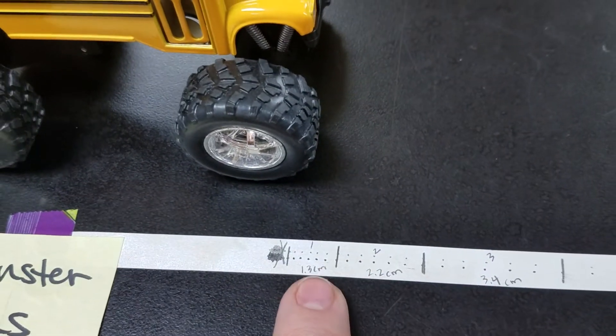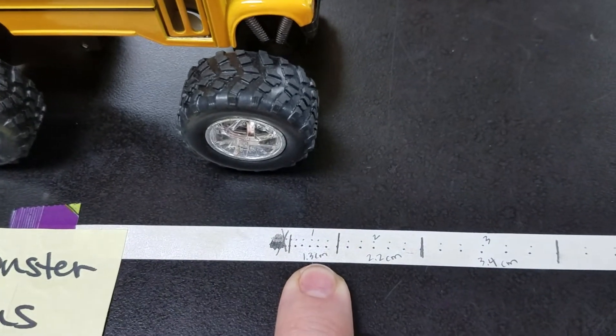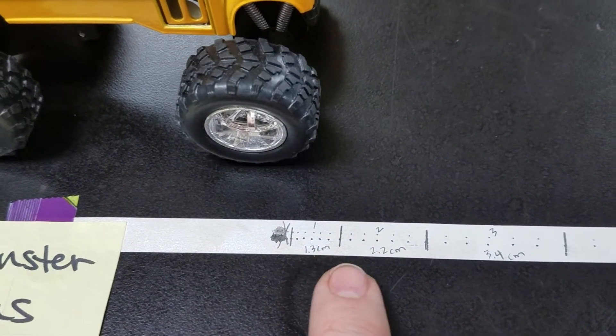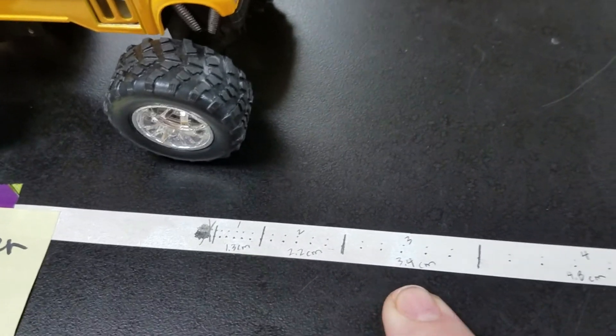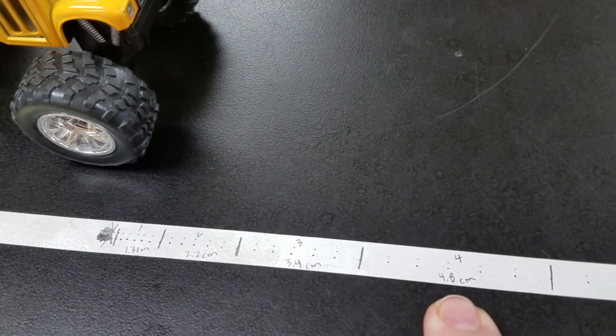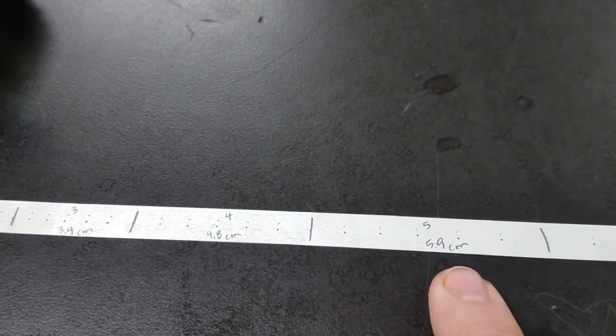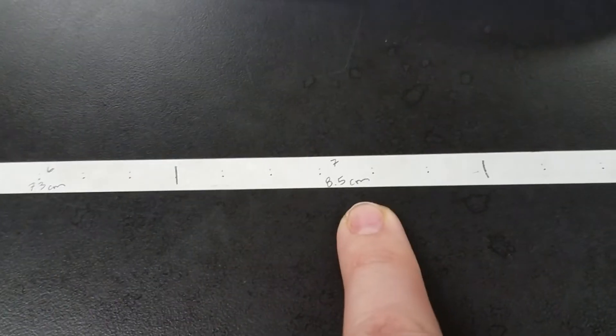So our first delta D, 1.3 centimeters, 2.2 centimeters, 3.4 centimeters, 4.8 centimeters, 5.9 centimeters, 7.3 centimeters, 8.5 centimeters.